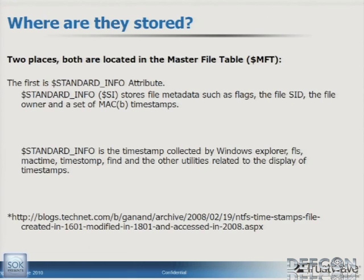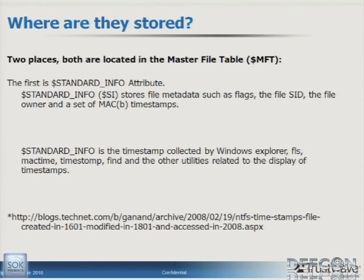Where are the timestamps stored? They're stored in two places, both located in the master file table. The first is the dollar standard info attribute, or SI attribute. It stores file metadata like flags, data about data, the file owner, and one set of MAC(B) timestamps. This is the timestamp collected by Windows Explorer when you sort by date, or by utilities like FLS, MacTime, and TimeStomp — all utilities related to the display of timestamps pull from standard info.